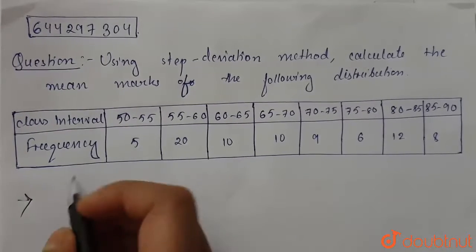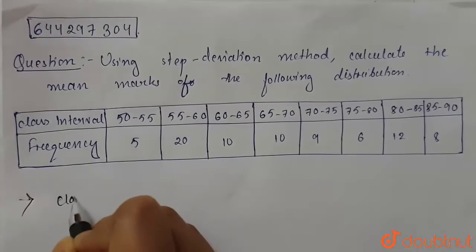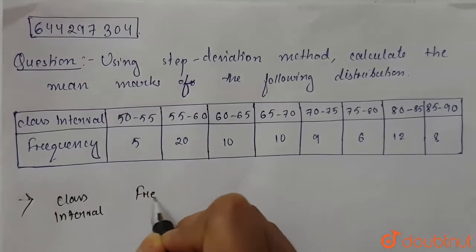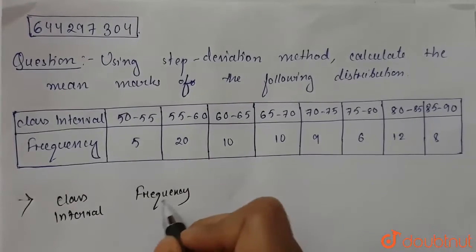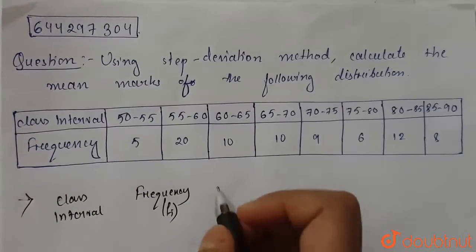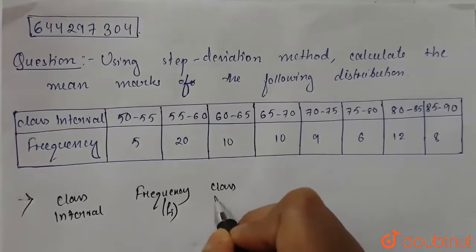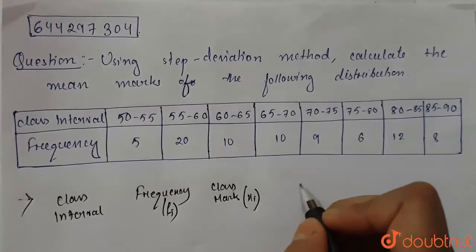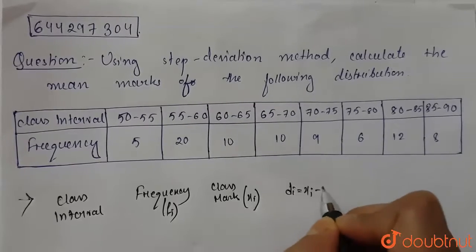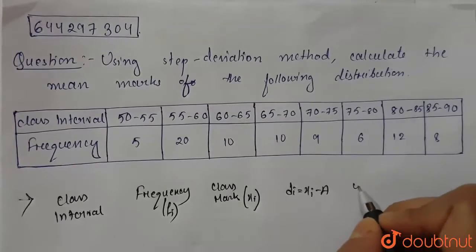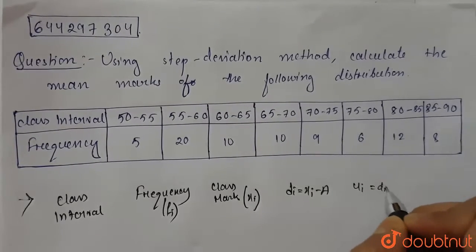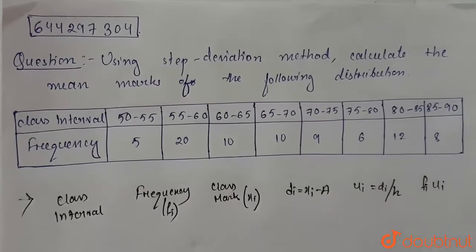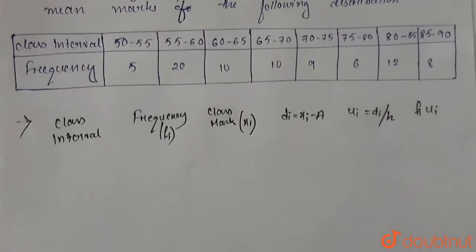The columns in our table will be: class interval, frequency (fi), class mark (xi), then di equals xi minus a, then ui which equals di divided by h, and lastly we need fi multiplied by ui.